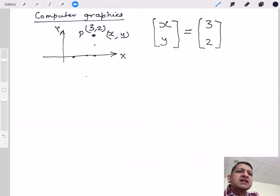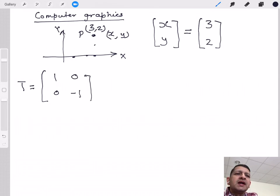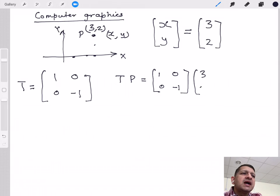Now imagine I have something called a transforming matrix. A transforming matrix is something like this. I call it T. T is like 1, 0, 0, minus 1. Now, if I take this transform matrix and multiply it with P, this is what is going to happen: 1, 0, 0, minus 1, and this is going to give me 3 and 2.